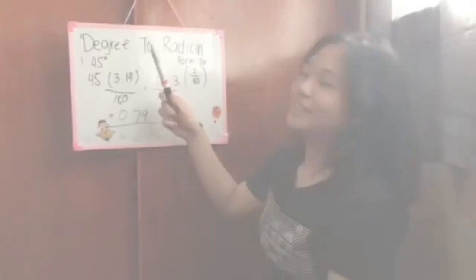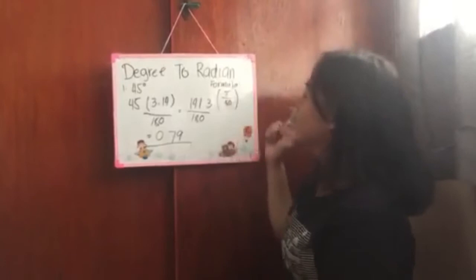Here, you just reverse the formula of degree to radian. You reverse the formula of radian to degree. So the formula becomes pi over 180.